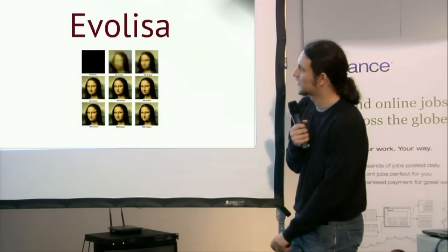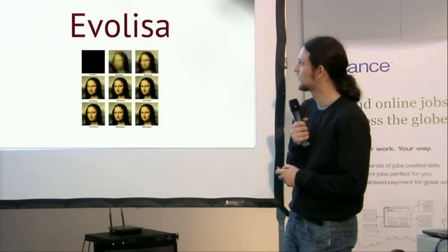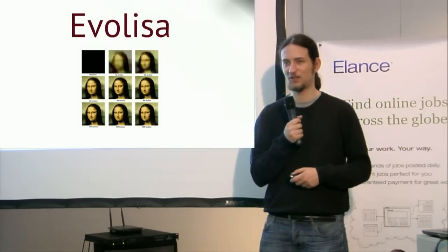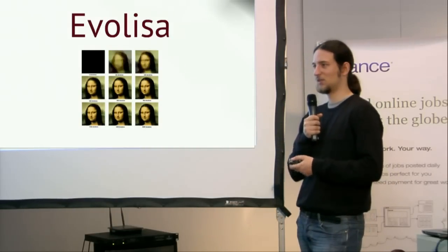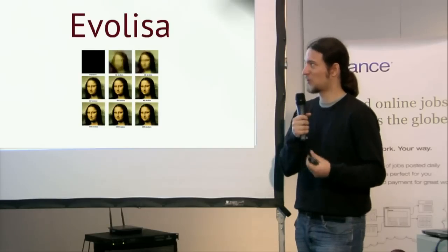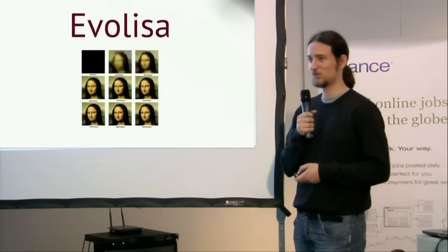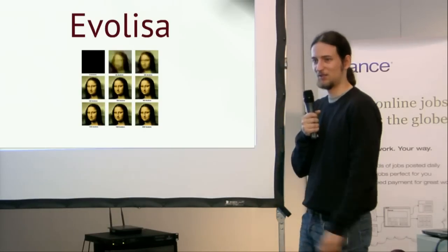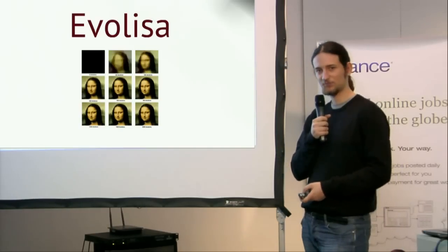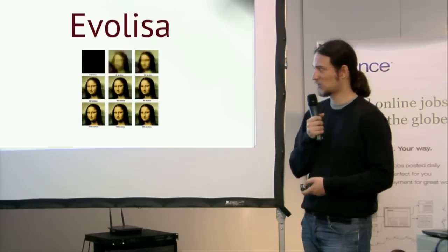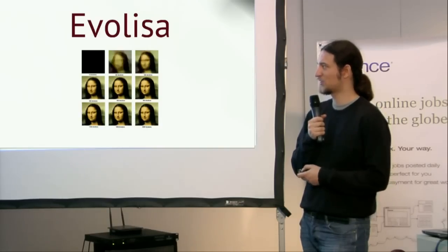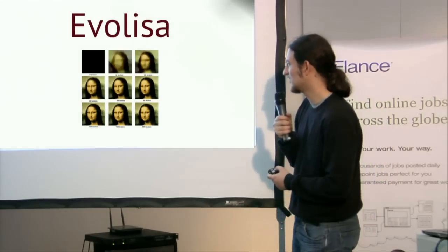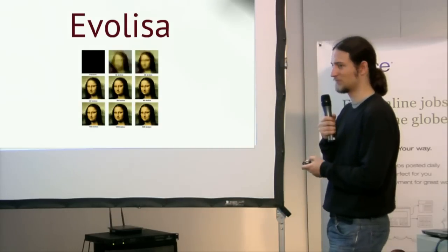Evolisa is something very interesting I'm working on something similar right now. It's evolving the Mona Lisa from a definite number of polygons with random color, random shape, random placement, and alpha. As you can see, it evolves into quite a good Mona Lisa. The fitness function is the difference between the actual Mona Lisa and the image we created. The last result is quite similar — it's quite amazing that it's created purely by a program.